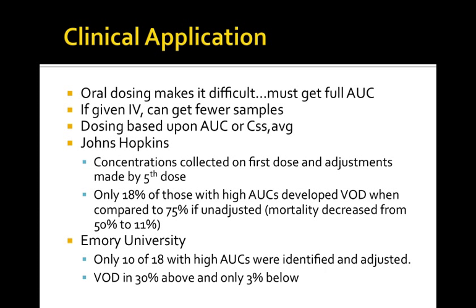Busulfan can be given orally or IV. Oral dosing makes monitoring harder because you have to capture the absorption phase of the AUC curve; with IV dosing, fewer samples are needed since you're only tracking the elimination curve. Johns Hopkins suggests collecting concentrations on the first dose and making adjustments by the fifth dose. Only 18% of those with high AUC developed VOD when adjusted, compared to 75% unadjusted — and mortality decreased from 50% to 11%. This is where pharmacist involvement makes a huge difference.